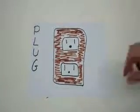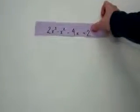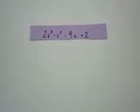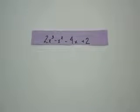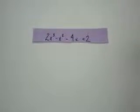Our problem today is 2x cubed minus x squared minus 4x plus 2. We're going to evaluate that for x equals negative 3.